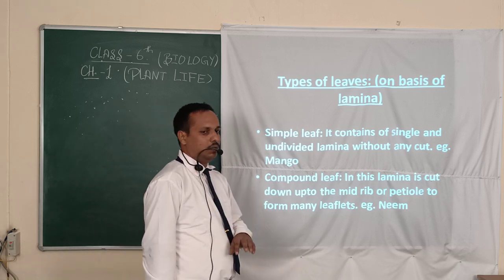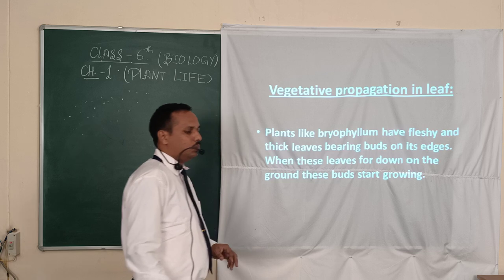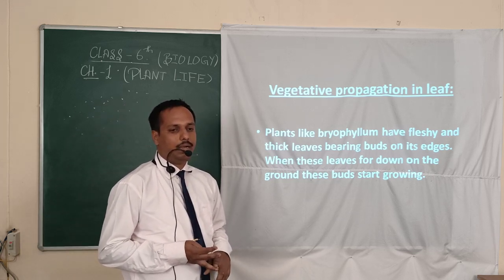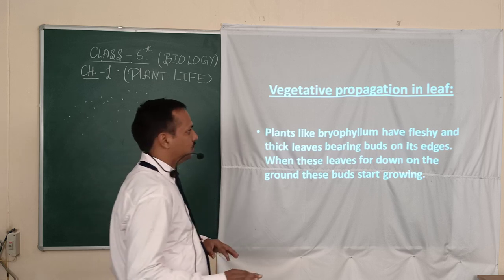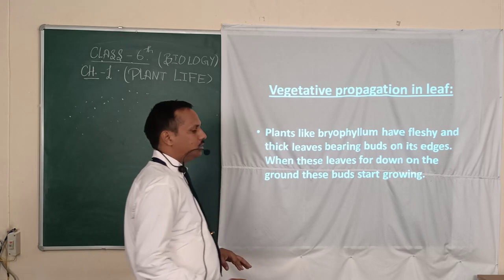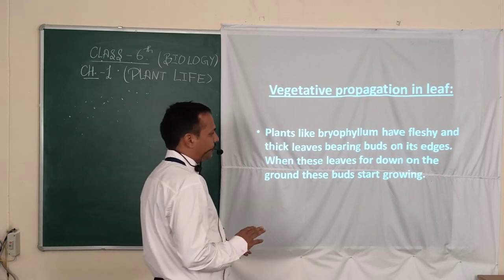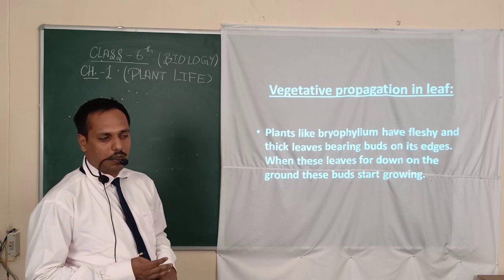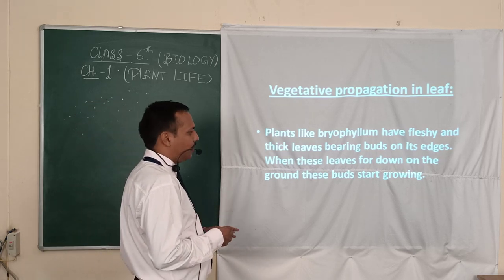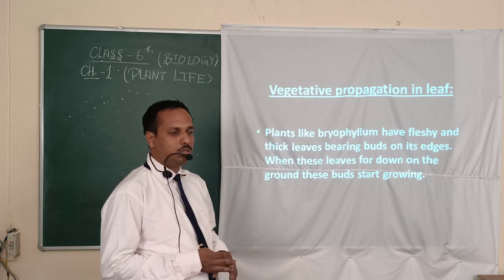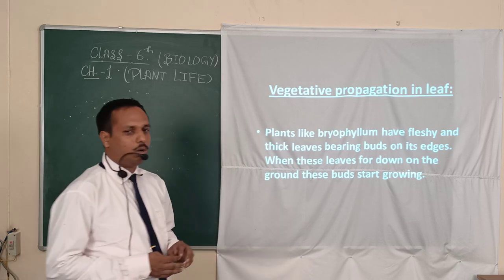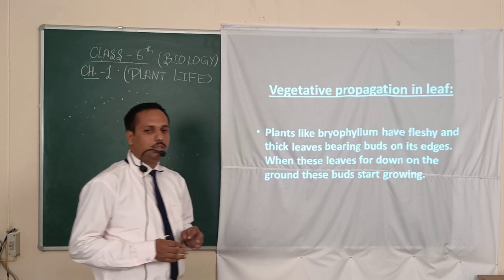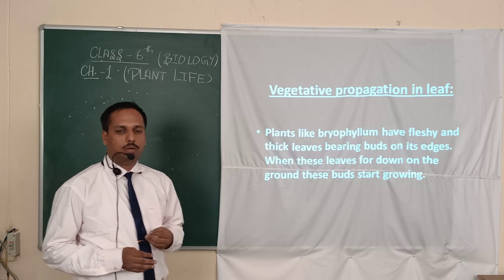The main functions of the leaf are to provide gaseous exchange, photosynthesis, and to remove excess water. Some plants have a reproductive pattern called vegetative propagation, in which the plant has fleshy and juicy leaves that bear buds on their edges. When these leaves fall down on the ground, these buds grow into new plants.